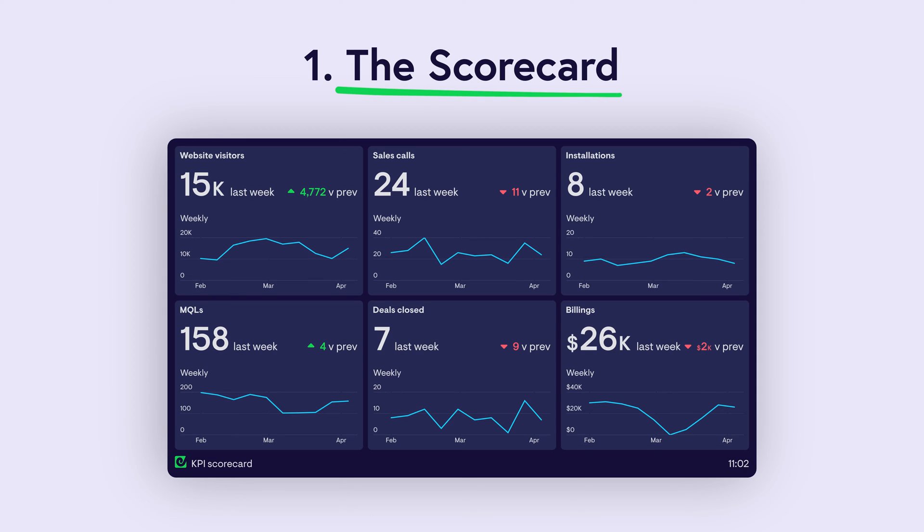Dashboard example number one: the scorecard. A scorecard is probably the simplest type of KPI dashboard that you can create for your business. There's no great science to it. You simply pick the five to ten KPIs which are most important for monitoring the health and performance of your business, and then you track them at regular intervals,